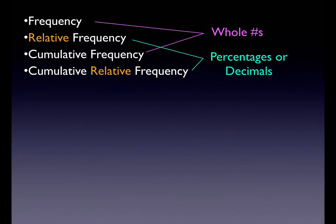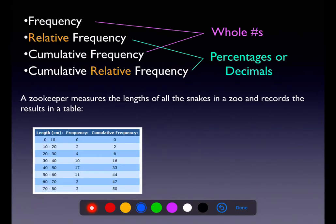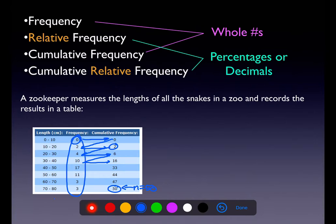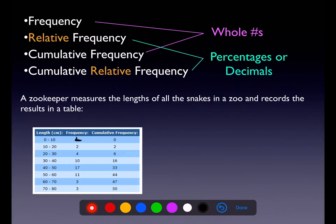So we've got frequency, relative frequency, cumulative frequency, and cumulative relative frequency. Two of these are whole numbers and two are percentages or decimals. Let's say we were looking at a zookeeper recording snake lengths in a table. We have a frequency and cumulative frequency column, and I want to remind you how you can zigzag: start with zero, move it over, then zero plus two is two, two plus four is six, six plus ten is sixteen, and so on. The last value is always your sample size.